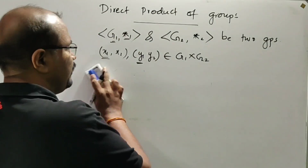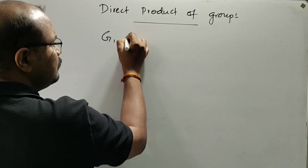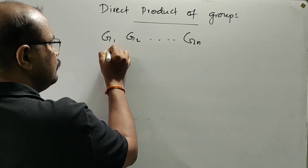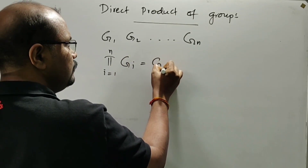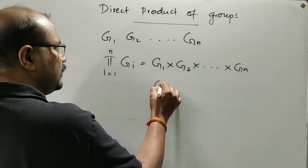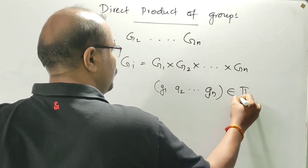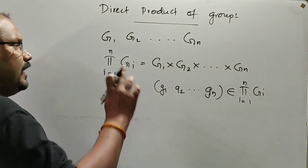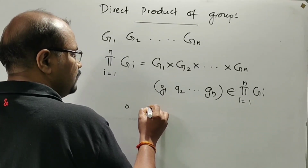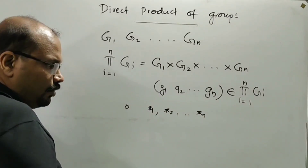Similarly, we can define the direct product of G1, G2, ..., Gn as the product Pi from i=1 to n of Gi. That is equal to G1 cross G2 cross ... cross Gn. It is the collection of n-tuples (g1, g2, ..., gn) belonging to the product, with the operation defined component-wise: g1 star1, g2 star2, ..., gn starn.